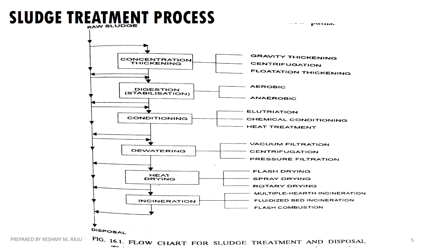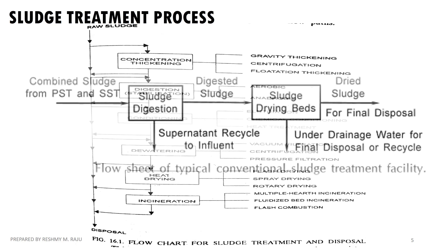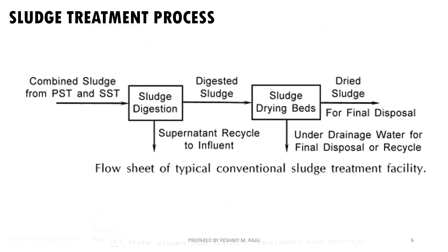As per the syllabus, the methods of sludge treatment include: concentration, thickening, digestion, conditioning, dewatering, heat drying, and incineration. For this process, you can use different types of unit processes. You can refer to the table showing a typical conventional sludge treatment facility flow sheet.